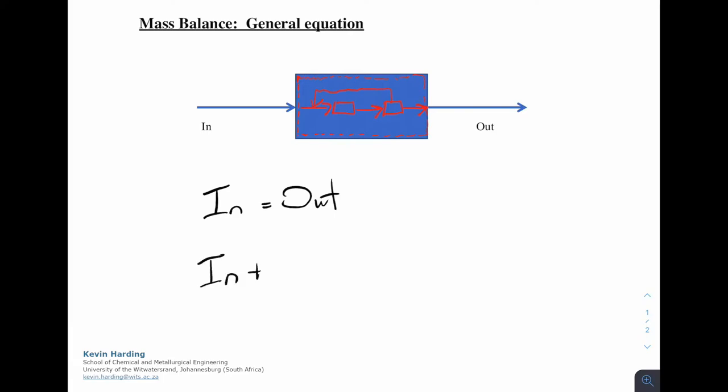So then we have in plus generation is equal to out. Or we could have had some chemical going in that's getting consumed by that reaction. So we could have said in plus generation is equal to out plus consumption. The consumption is something that's being lost, so that means it's the same as something going out.